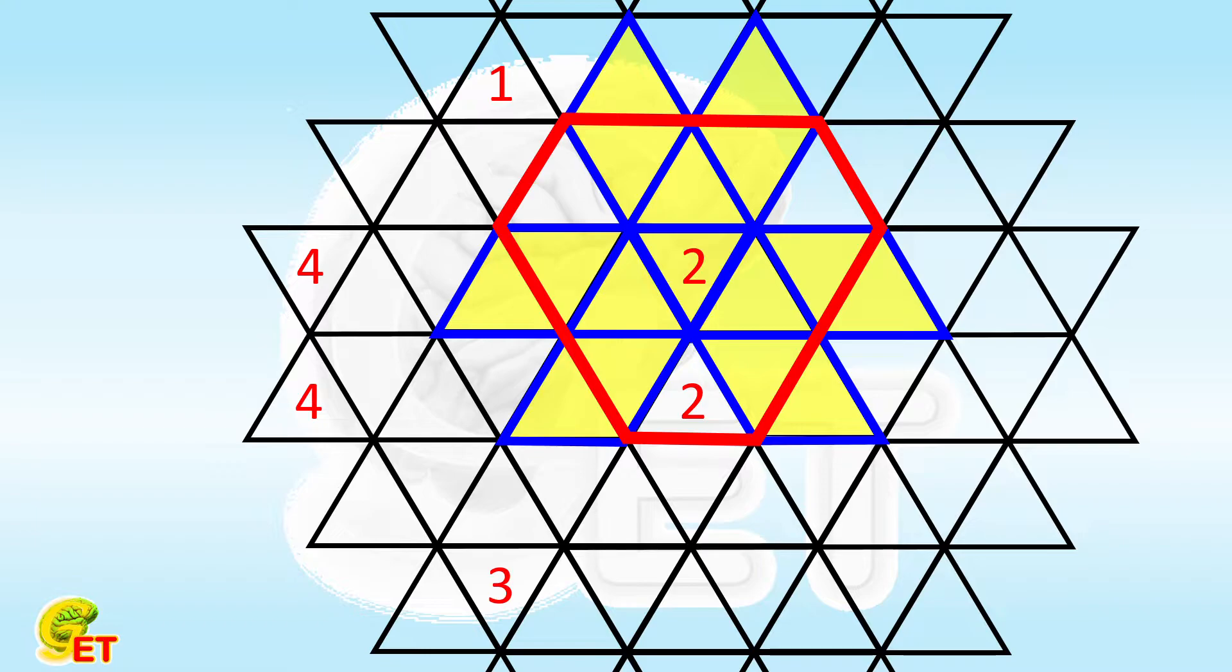The 3 connected yellow parts in the middle cannot be filled with the same number. And, cannot be 2, either. The white small triangles in the corner can be connected to them separately, to make up 4 connected ones. So they can only be filled with number 2.